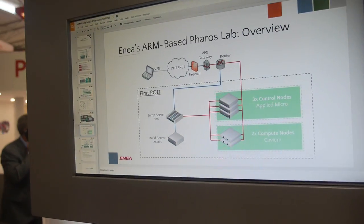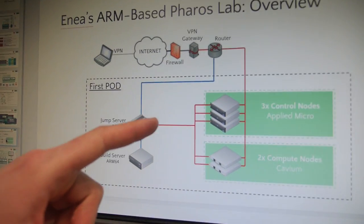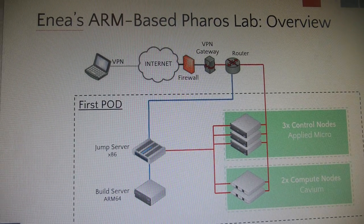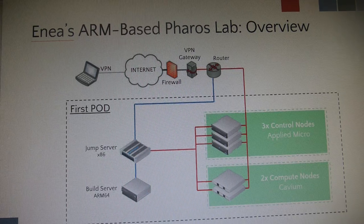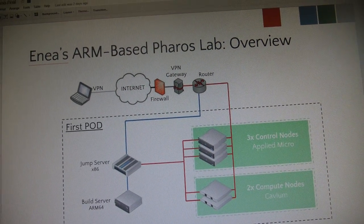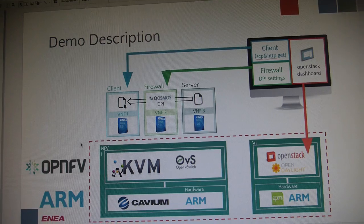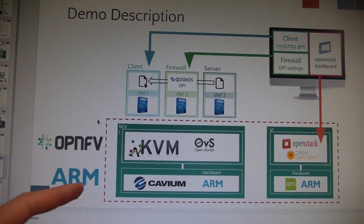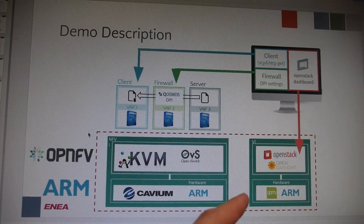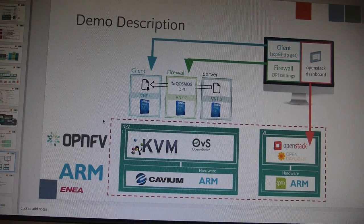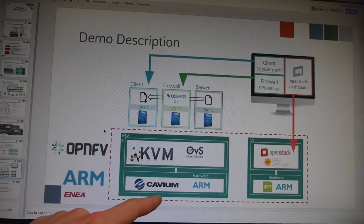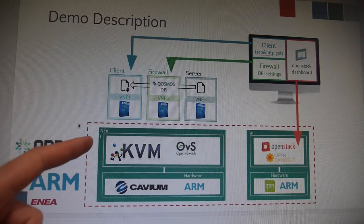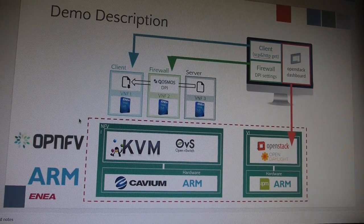The reference lab is comprised of three controller nodes and two compute nodes running OpenStack and Ubuntu. We are building the OPNV platform running OpenStack and OpenDaylight for an NFV virtualization solution. These are the targets: KVM and Applied Micro. Virtualization acceleration is done by KVM, so it's open source.